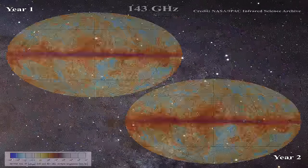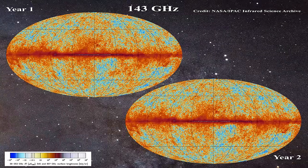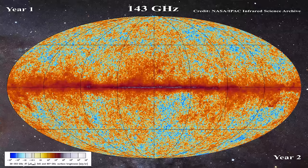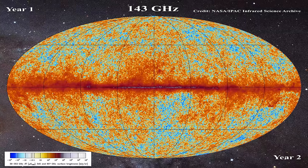Next, here is 143 GHz year 1 and year 2, then the overlap, and then finally the subtraction.